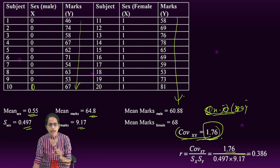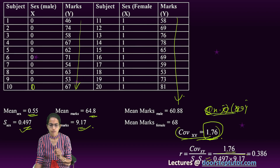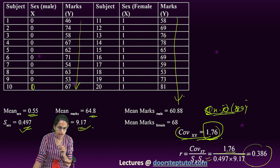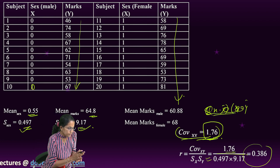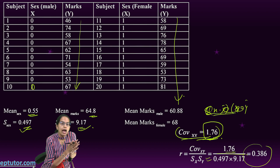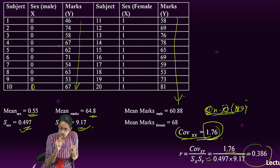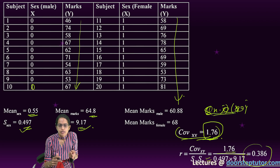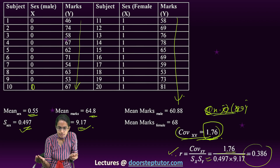Then that covariance I would divide by the standard deviation for both groups — males as well as females — to get the correlation value, let's say 0.386. So in the case of point biserial, the formula is very simple: correlation equals covariance divided by standard deviation.